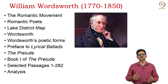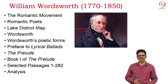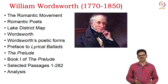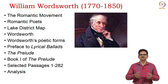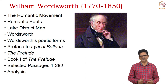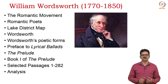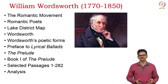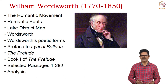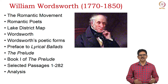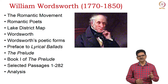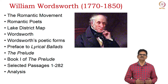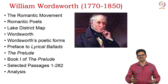Hello. The first poet that we look into in the Romantic period is William Wordsworth. He was born in 1770 and died in 1850, and it was he and Coleridge who announced this Romantic movement. We will see the Romantic poets together in one slide, then see the map of Lake District, because many of these poets were called Lake District poets or Lake poets. The prominent Lake poet is Wordsworth. We will see some of the poetic forms experimented by Wordsworth, then pay attention to the Preface to Lyrical Ballads and to The Prelude, from which we have Book One for our discussion.